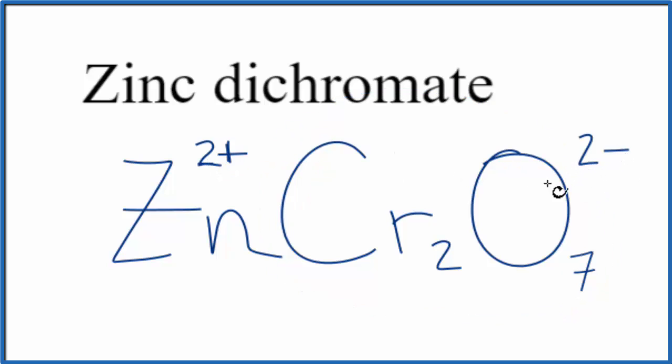So 2+, 2-, that balances out. That gives us a net charge of 0. So this is the formula for zinc dichromate.